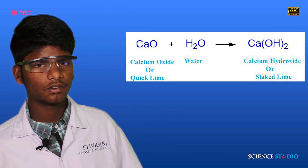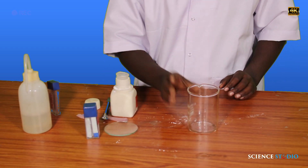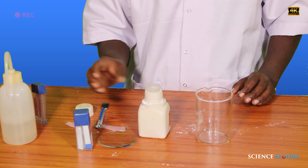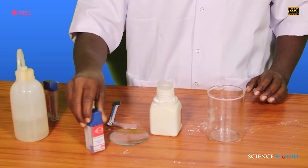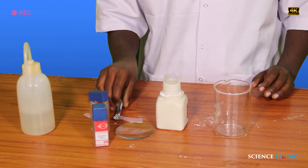Hi guys, good morning to everyone. I am here to perform an activity on calcium hydroxide formation. Before performing the activity, let me discuss the materials required: beaker, calcium oxide, blue litmus paper, red litmus paper, and spatula.